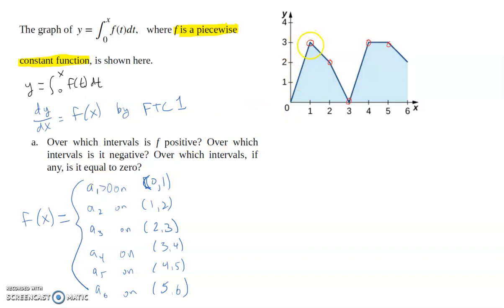It's decreasing from 1 to 2 and from 2 to 3, so the function will be negative on those two intervals. Then from 3 to 4, the function is increasing, so the derivative is positive. Then here, the function is flat, which tells us that the derivative will be 0 there. And then the graph starts decreasing again from 5 to 6, and so this is going to be less than 0 from 5 to 6.